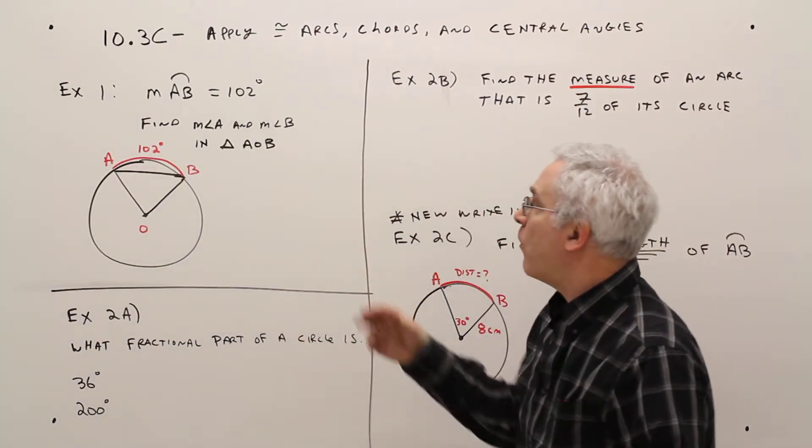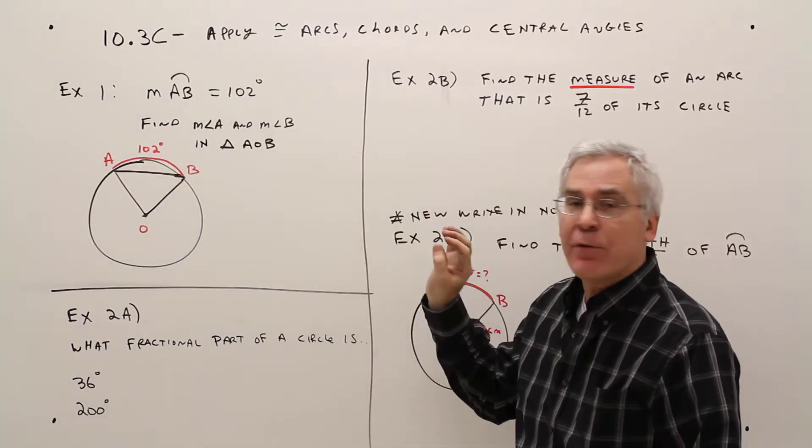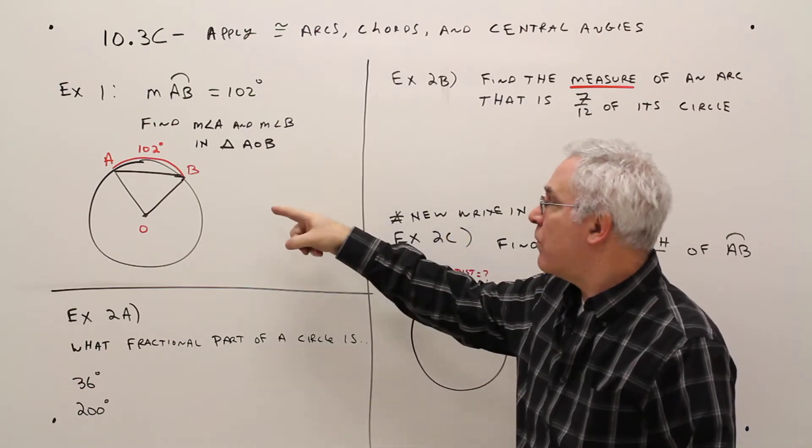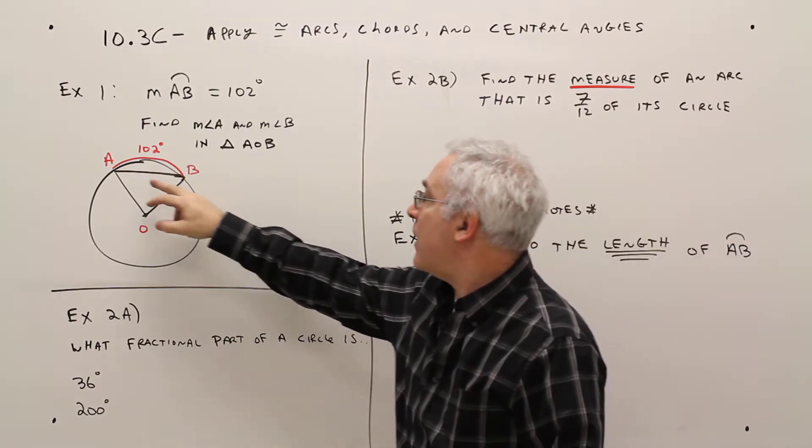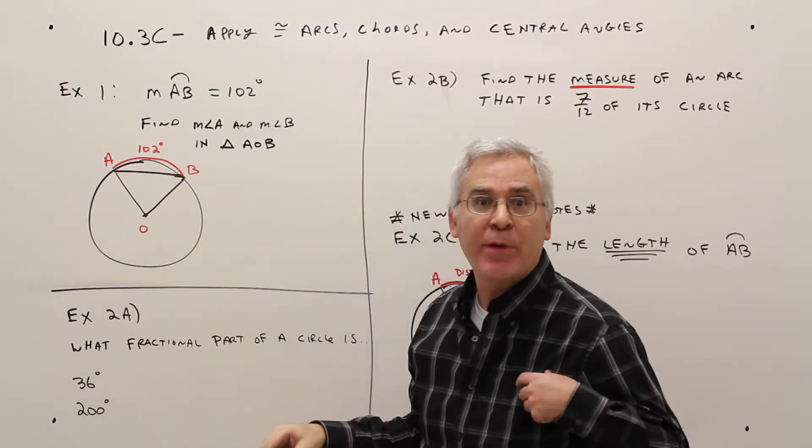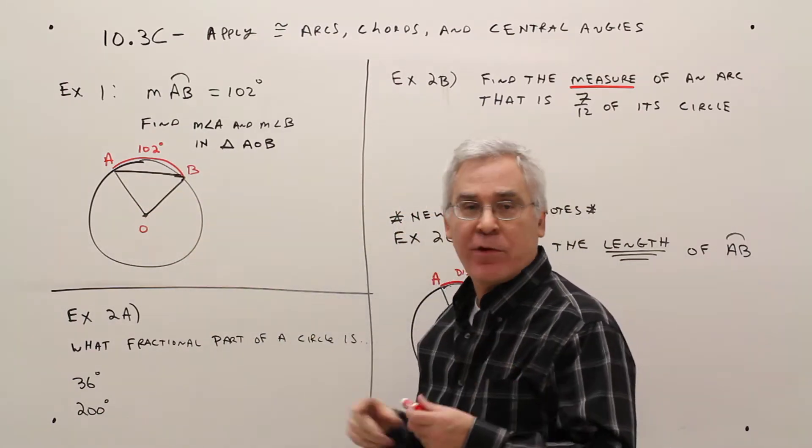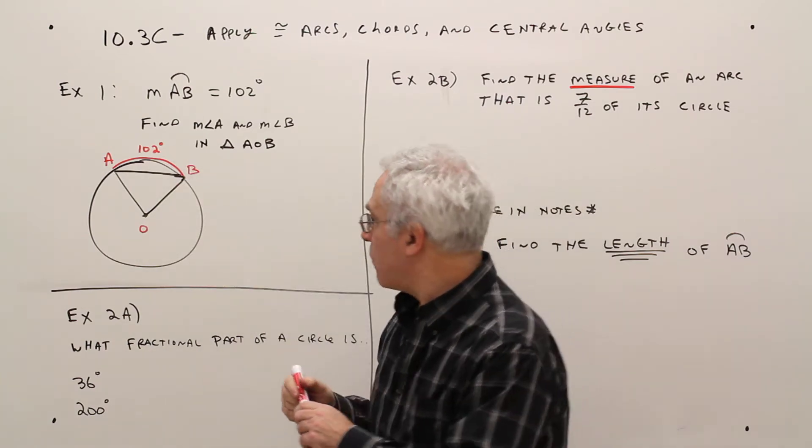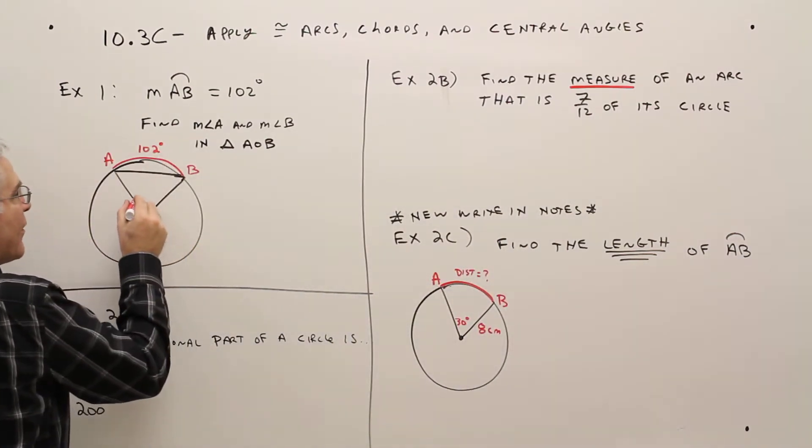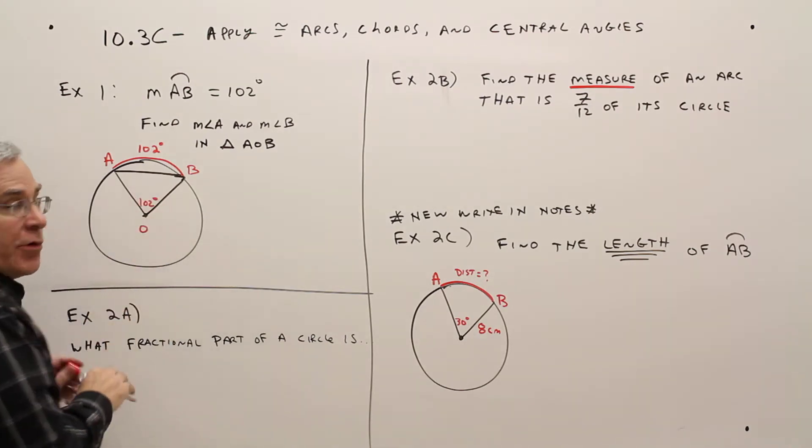Alright, so we've got example 1 here. The measure of arc AB is 102 degrees. We want to find the measure of angle A and the measure of angle B in triangle AOB. And O is the center point. Okay, so since this arc is 102 degrees, that means the central angle is 102 degrees.